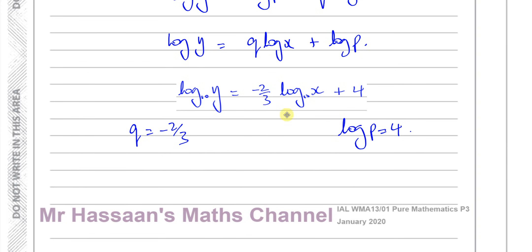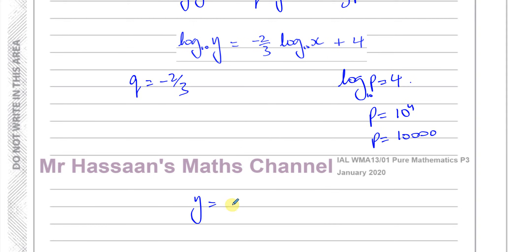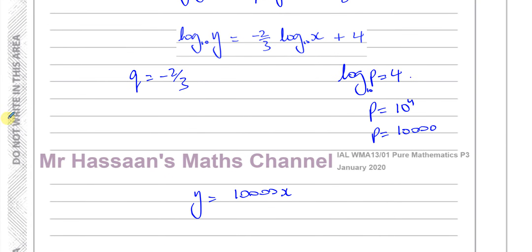So, the log p is 4. So, we can find the value of p. This is log to the base 10, remember? So, what this means is, p is equal to 10 to the power of 4. So, p is equal to 10,000. So, now, we want to write this in the form y equals px to the power of q. So, we can say y equals p, which is 10,000 x to the power of q, to the power of minus 2 thirds. And here we have the answer.